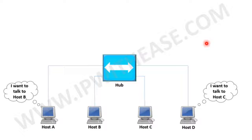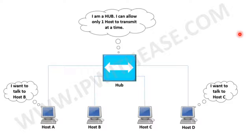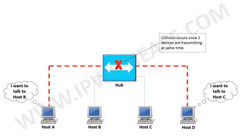Host A wants to communicate to host B, and at the same time, host D wants to communicate to host C. Both host A and D send traffic towards the hub at one go. However, the hub can only allow one host to transmit at a time. So when traffic is received from two hosts — host A and D — at the same time, a collision occurs on the hub, which is heard by all four hosts.